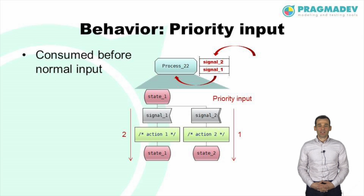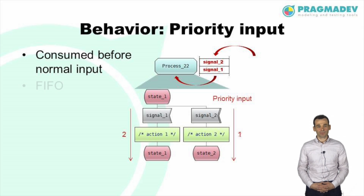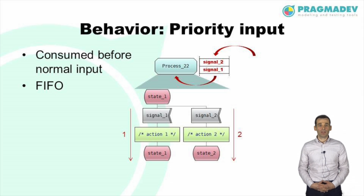In some cases it is convenient to express that reception of a message takes priority over reception of other messages. This can be expressed by means of priority input. Although signal 1 comes before signal 2 in the queue, it is signal 2 which will be treated first because of the priority. If more than one priority input is defined in the current state, then they are consumed in first in first out order like normal message inputs.